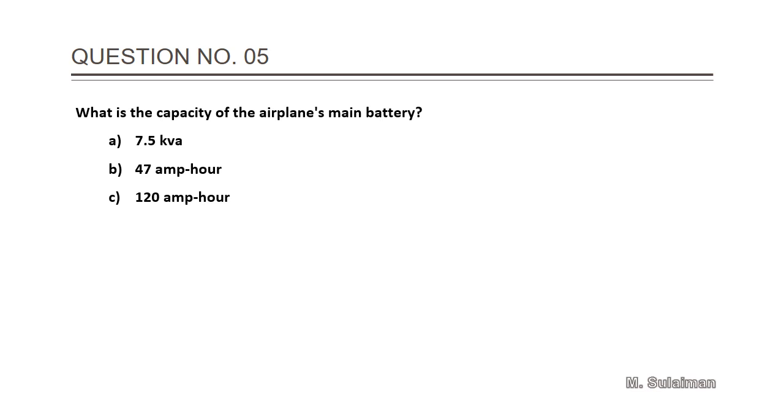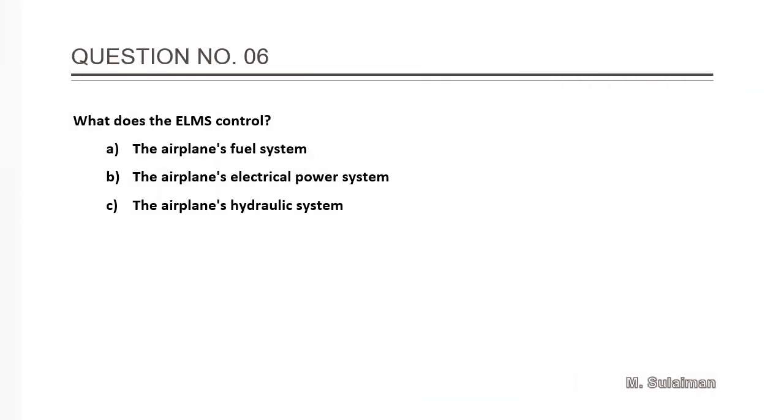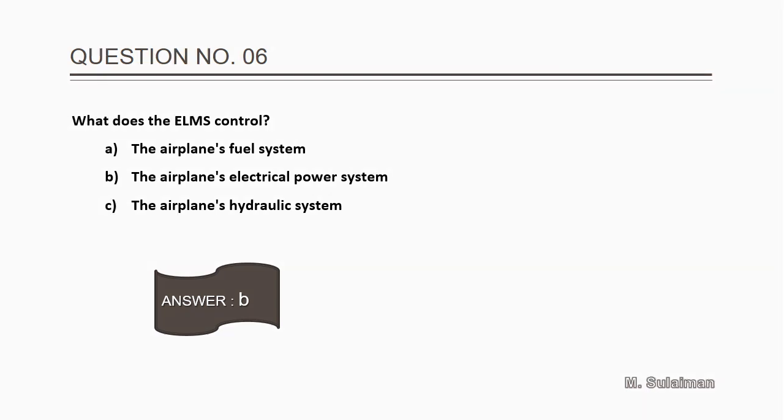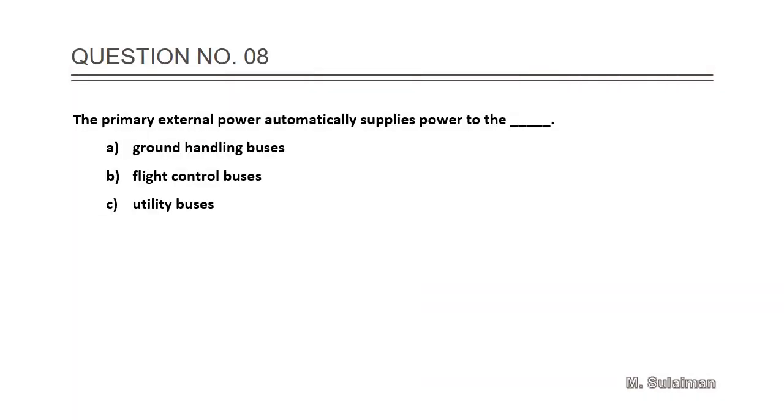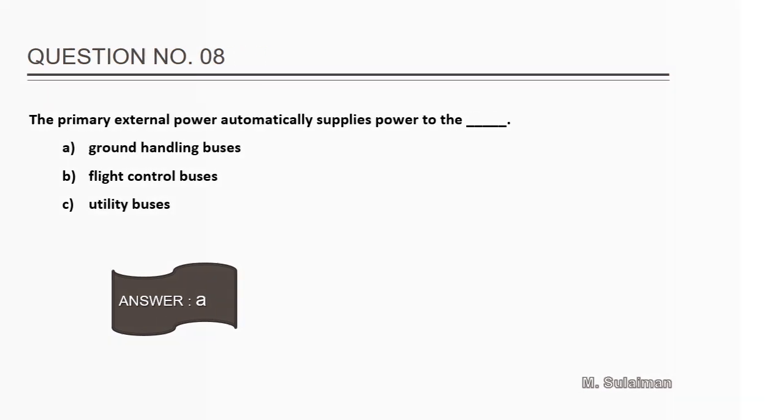Question number five: What is the capacity of the aircraft main battery? Answer is B: 47 ampere hours. Question number six: What does the ELMS control? The answer is B: the aircraft or the airplane's electrical power system. Seven: Where does all airplane electrical power go through for distribution?